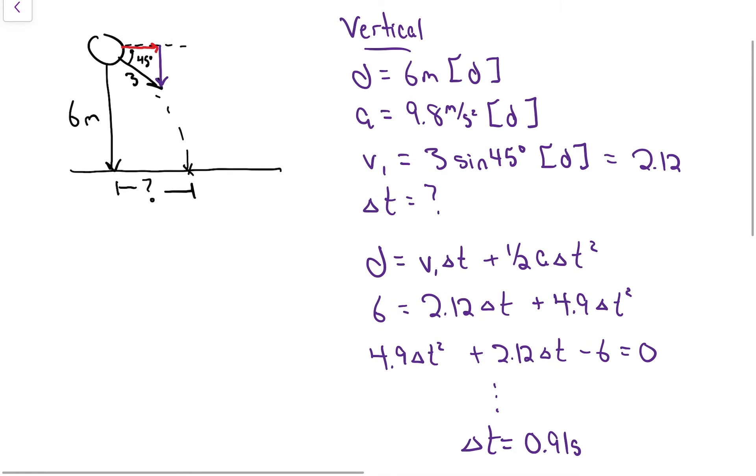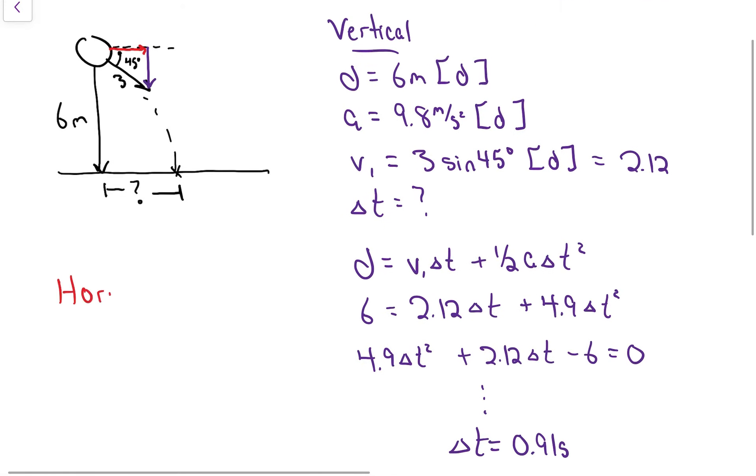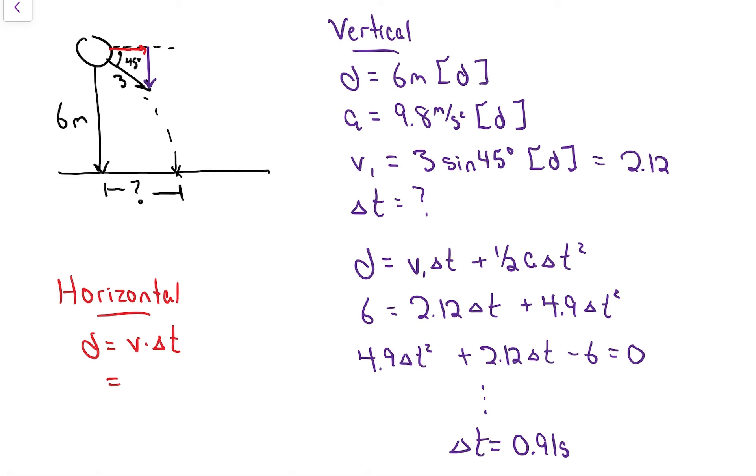Now that we've got the time, now we can plug that into the horizontal. Distance in the horizontal is always speed multiplied by time. Again it's a component thing, it's adjacent to the 45, it didn't change which trig ratio just because it goes downhill. 3 cos 45, this time it's the same number, 2.12, and then multiply that by 0.91. We get that it lands a distance of 1.9 meters sideways from where it started.